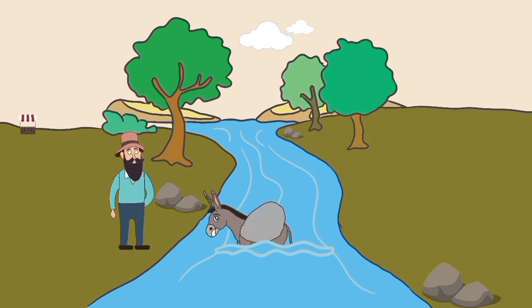To the donkey's surprise, this time, the load became heavier instead of lighter. The load was so heavy that the donkey couldn't even get up from the river on its own. This happened because the cotton had absorbed much water from the river.